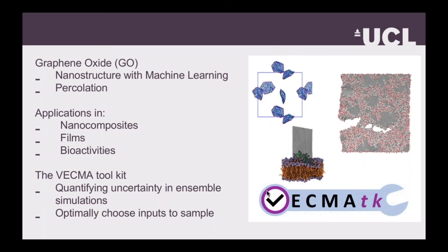I want to talk about the VECMA toolkit. VECMA is a European project which stands for Verified Exascale for Multi-scale Computing for Multi-scalar Applications. There are a few tools in there that have been really useful in our projects that help with ensemble generation and handling validation, verification, and uncertainty qualification. I think that'll be very useful to a lot of people in this consortium.